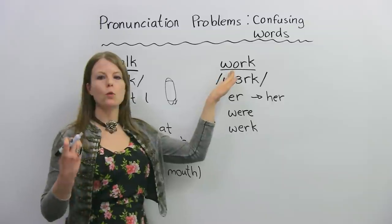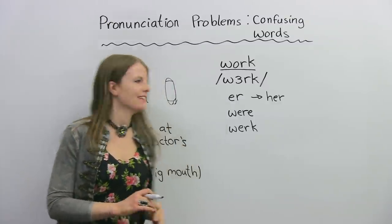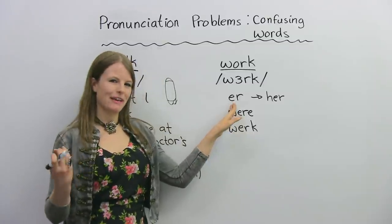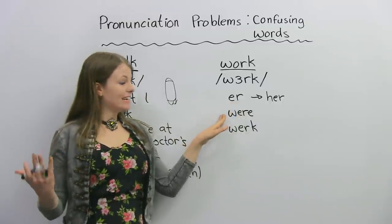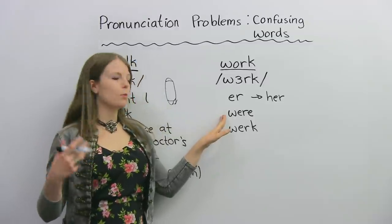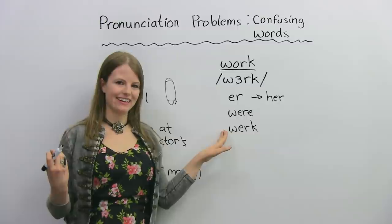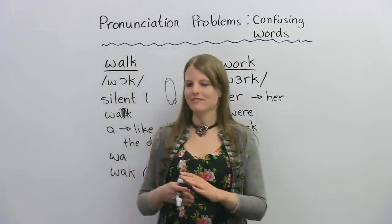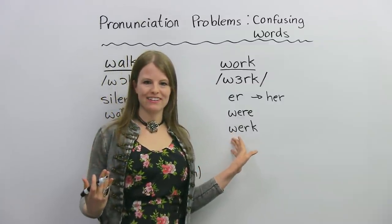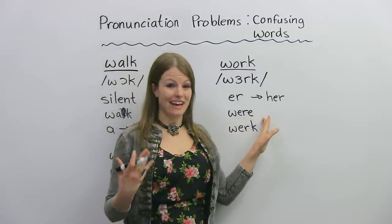Now I want you to compare this with the vowel sound in work. Does my mouth open up a lot? Work. Walk. No — there's a big difference in what my mouth is doing. With work, we need again to make the ER sound — 'her', 'er'. I want you to say the word 'were', then add a K: work. Let's compare the two: walk — work. The main difference is in what your mouth is doing. For walk, your mouth is very open; for work, it's not really that open.